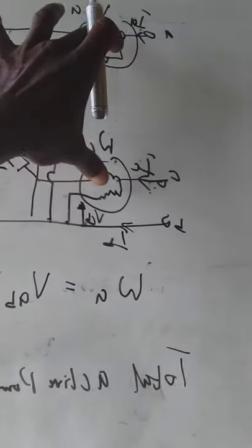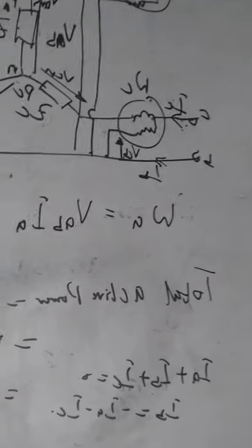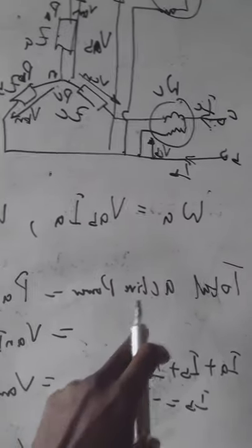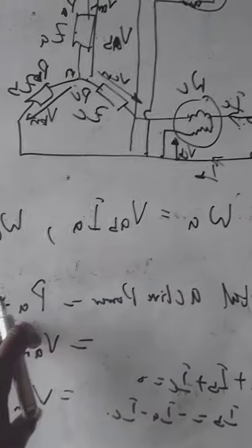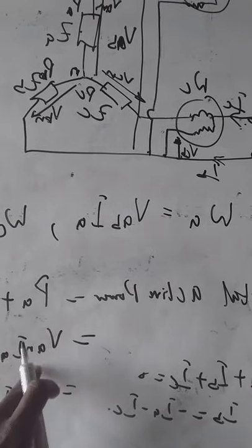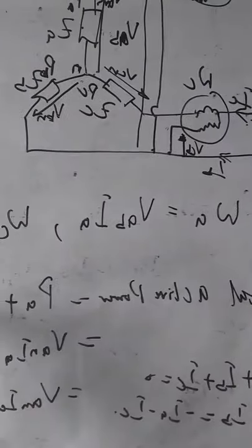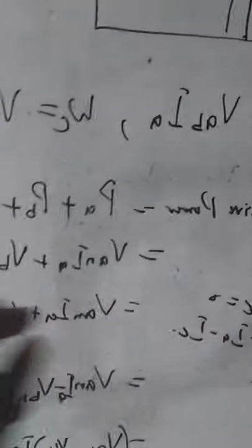So now total active power is PA plus PB plus PC, which is VAN IA plus VBN IB plus VCN IC. Now if you expand them, you have VAN IA, VBN IB, and VCN IC.